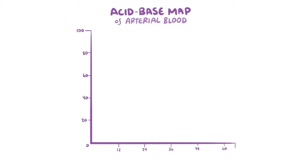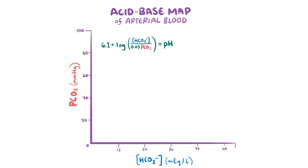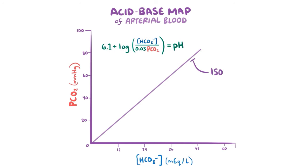If we focus on the pH of our arterial blood, we can design a diagram or acid-base map with the concentration of bicarbonate on the x-axis and the partial pressure of carbon dioxide or pCO2 on the y-axis. Using the Henderson-Hasselbalch equation, we can plot a line called the isohydric line that starts at the origin. The term isohydric means that along these points, they all share the same concentration of hydrogen ions — isohydric.